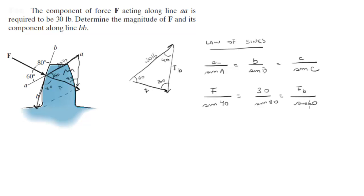So F is going to equal—I'm going to solve for it—it's going to be 30 times sine of 40 over sine of 80, which means F is equal to 19.58 pounds.